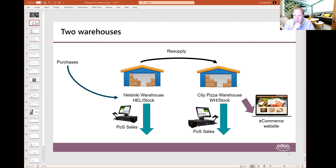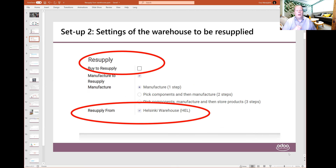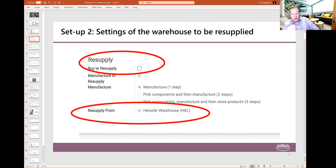So how do we do this in Odoo? First, we need to set up something in Odoo's configuration. We need to set up multi-step routes that allow this. The second thing is that we need to go to the warehouse that will be resupplied and select that this warehouse is being resupplied from the other warehouse. For this warehouse, we should also clear the setting of buy to resupply, so that Odoo will not create purchase orders for this warehouse.